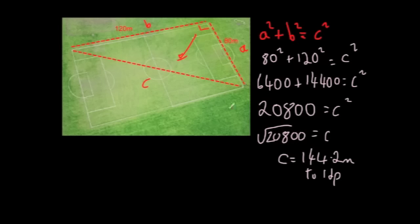This could have been any normal rectangle where you're given the length and the width. It could also be a square, where you're given the length of one side — on a square, the two sides would be the same. For any rectangle or square where you need to work out the length of the diagonal, you're going to use Pythagoras' theorem.